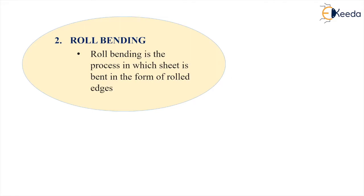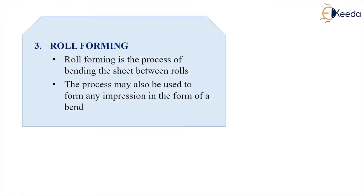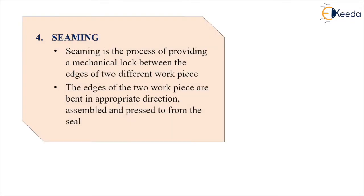Roll bending is the process in which the sheet is bent in the form of rolled edges. Roll forming is a process of bending the sheet between rollers, similar to a rolling operation. The process may also be used to form any impression in the form of a bend. Seaming is basically the joining of two sheets at the edges, or locking of the sheets.